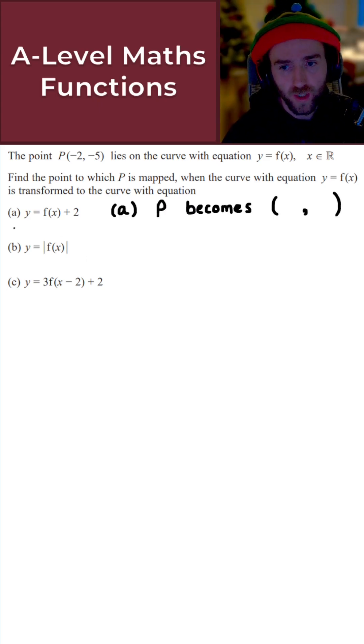For part A we have y = f(x) + 2. Now y = f(x) + 2 is simply a vertical translation.